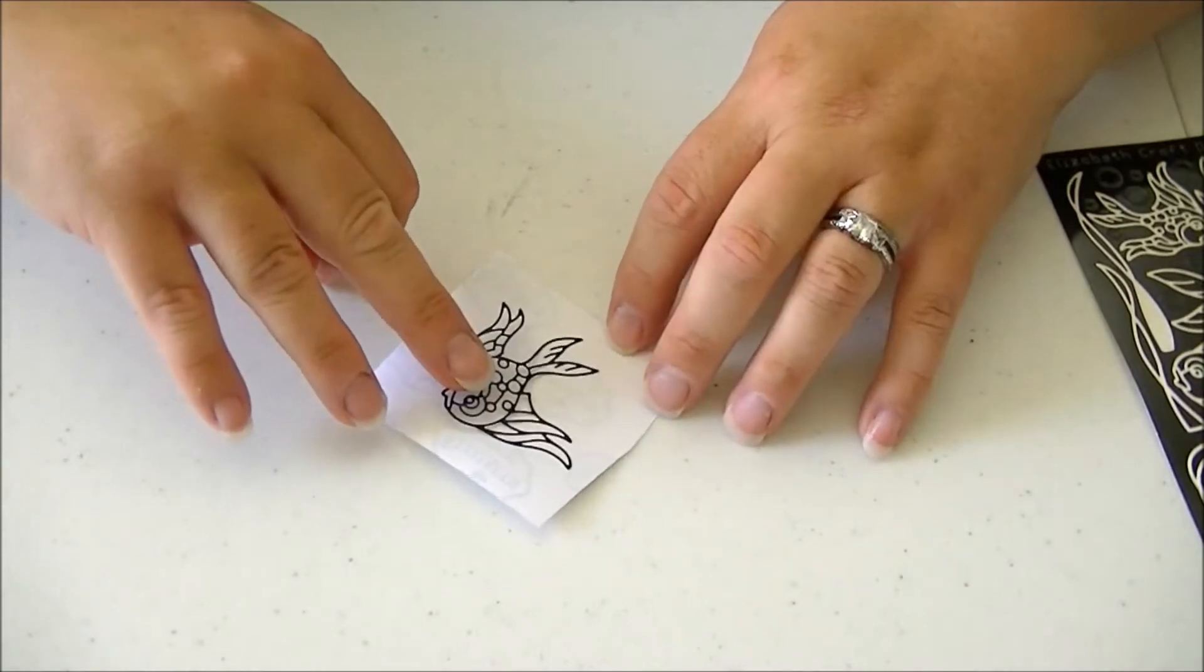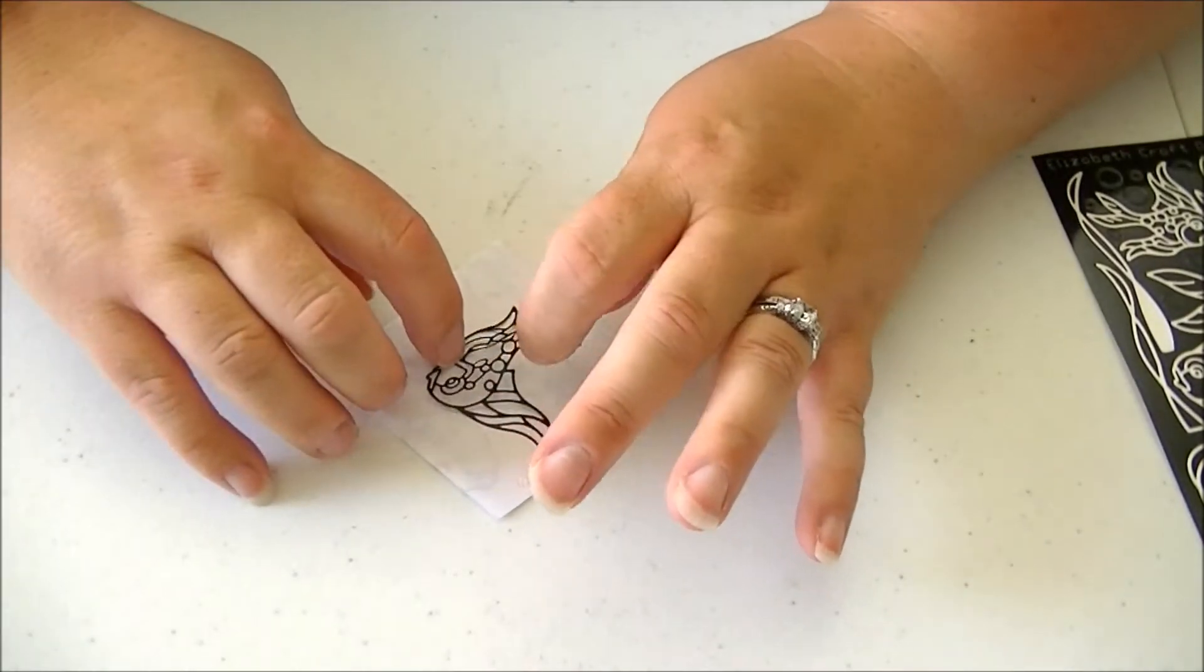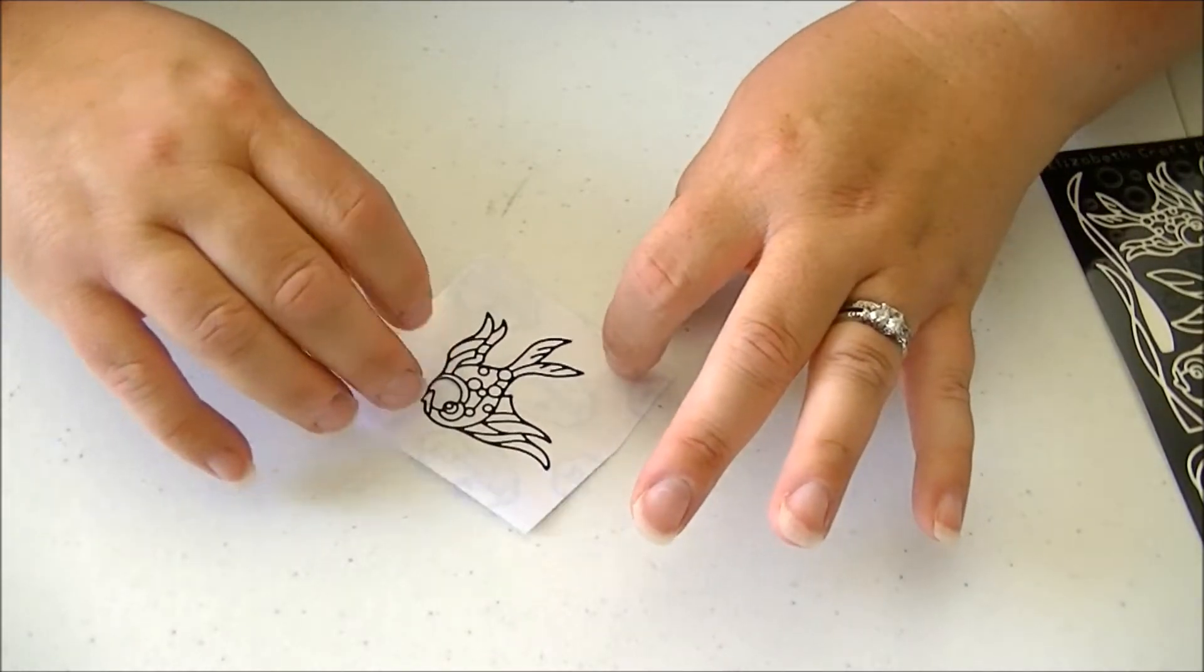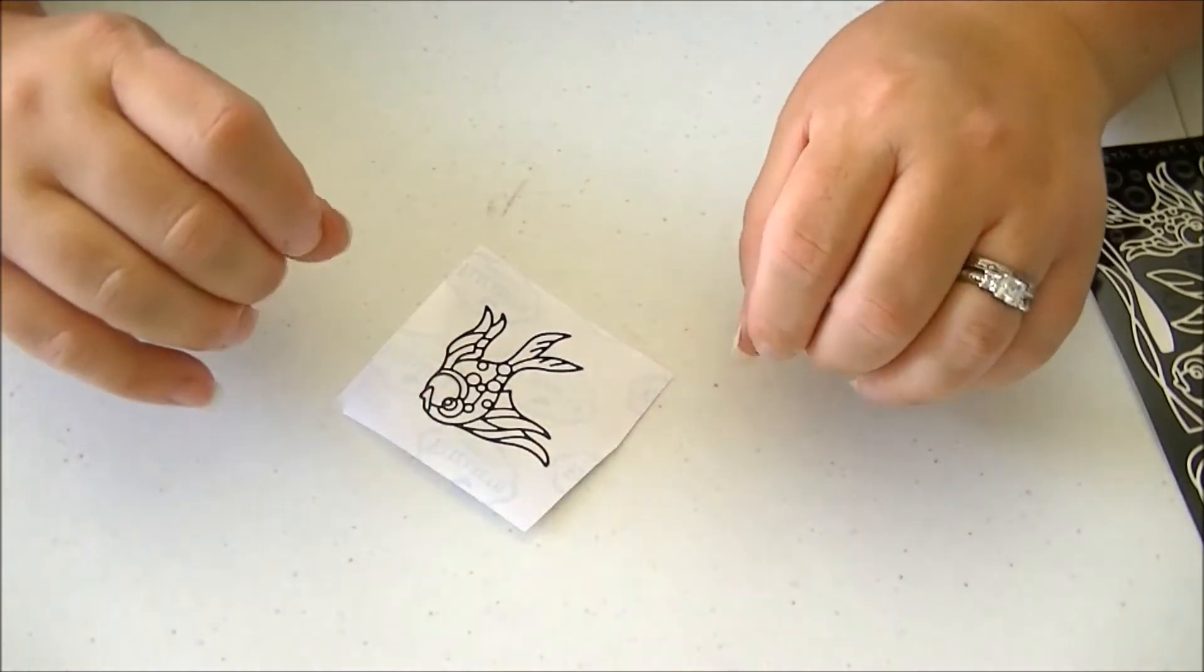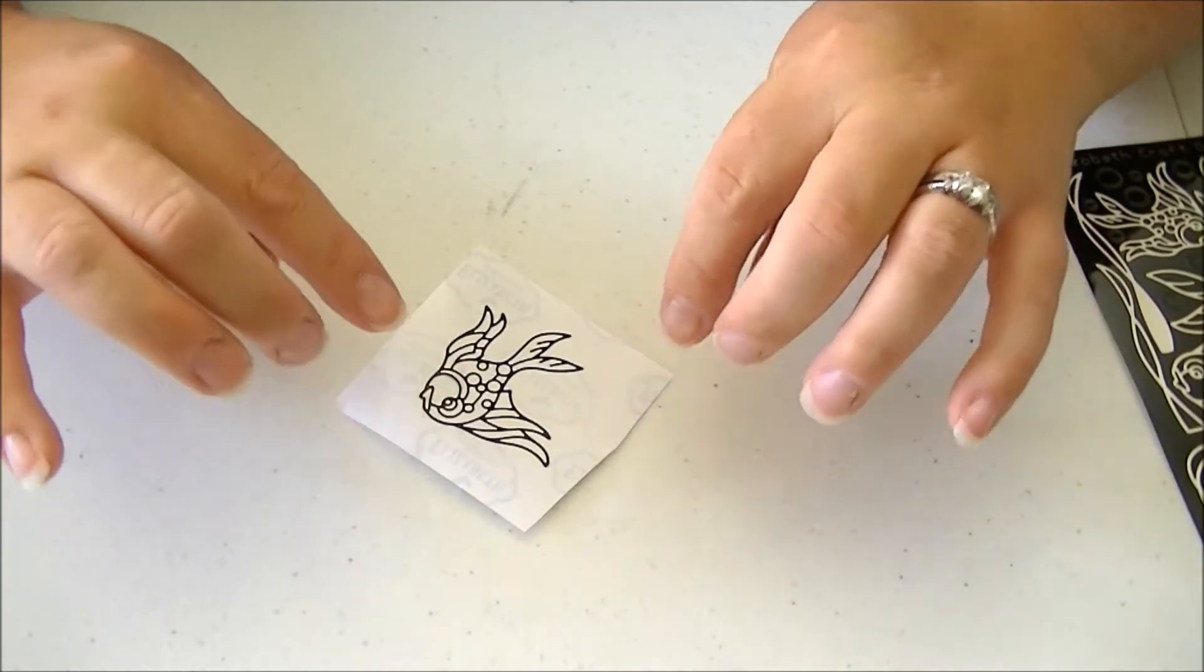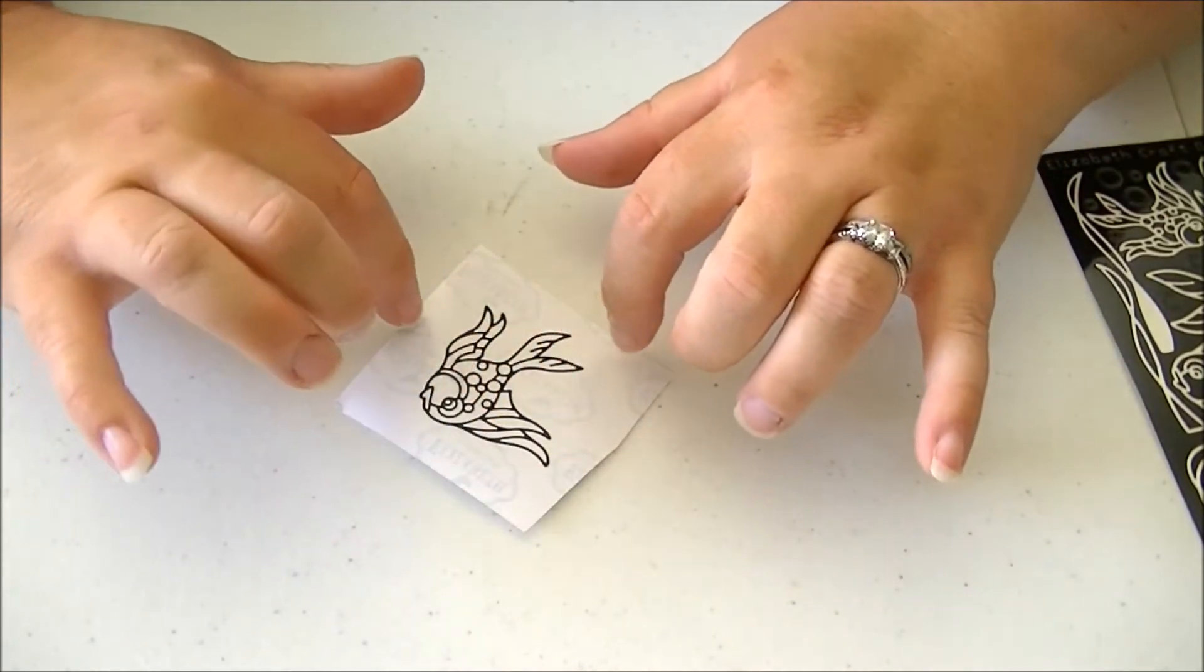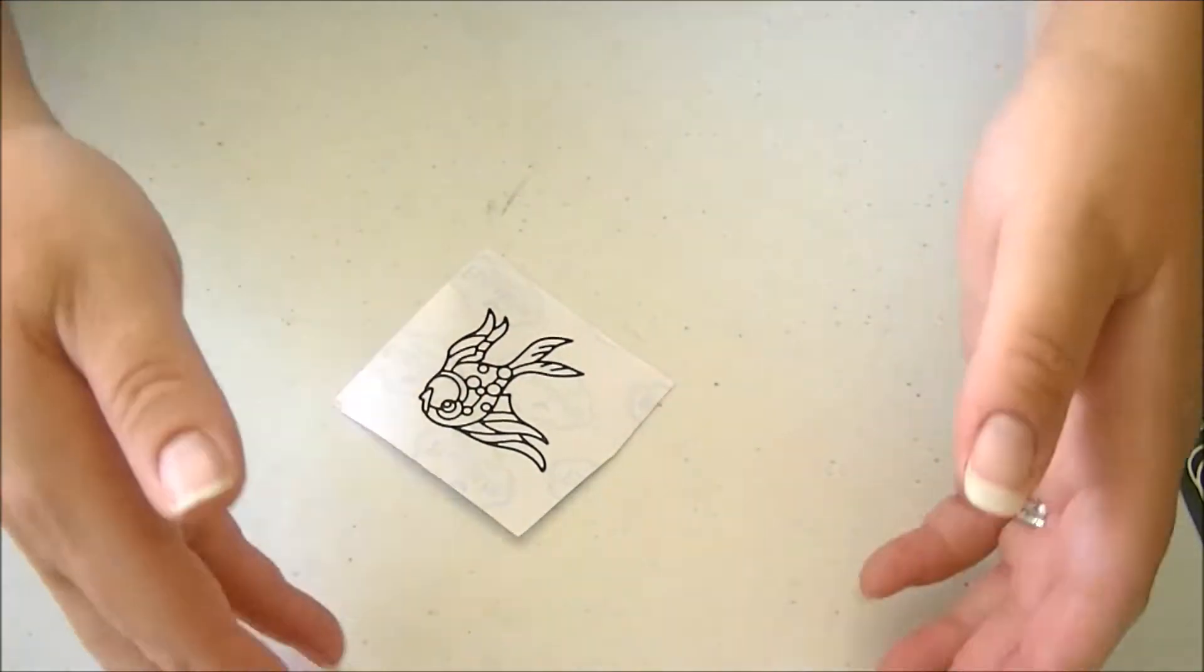We're going to place it upside down, sticky side up, on this backing that we pulled off. Sometimes it sticks to your fingers—just work it around. If you lick your finger and stick it on there, that'll help it release too. At this point, make sure it's centered and all the little pieces came out.